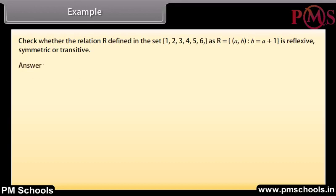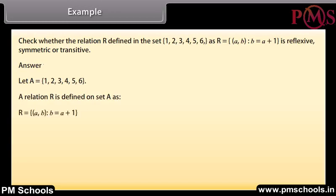Answer: Let A = {1, 2, 3, 4, 5, 6}. A relation R is defined on the set A as R = {(a, b) such that b = a + 1}. Therefore, R = {(1,2), (2,3), (3,4), (4,5), (5,6)}.